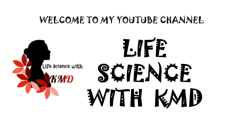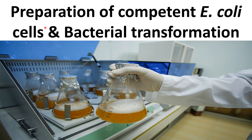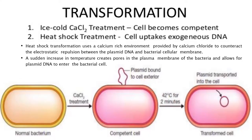Hello everyone, welcome to my YouTube channel Life Science with KMD. Today I'm going to explain about preparation of competent E. coli cells and bacterial transformation. Chemical transformation mainly depends on two steps: calcium chloride treatment, where cells become competent, and heat shock treatment, where cells take up exogenous DNA.